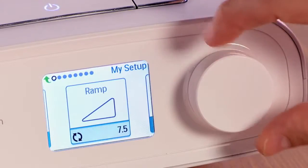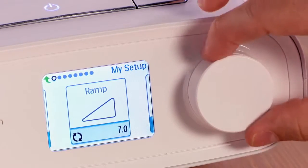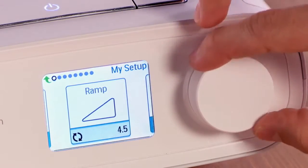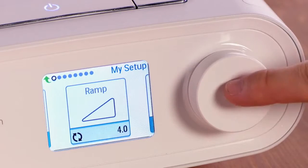Turn the control dial to increase or decrease the ramp start pressure in 0.5 cm increments. Push the control dial to save the change.